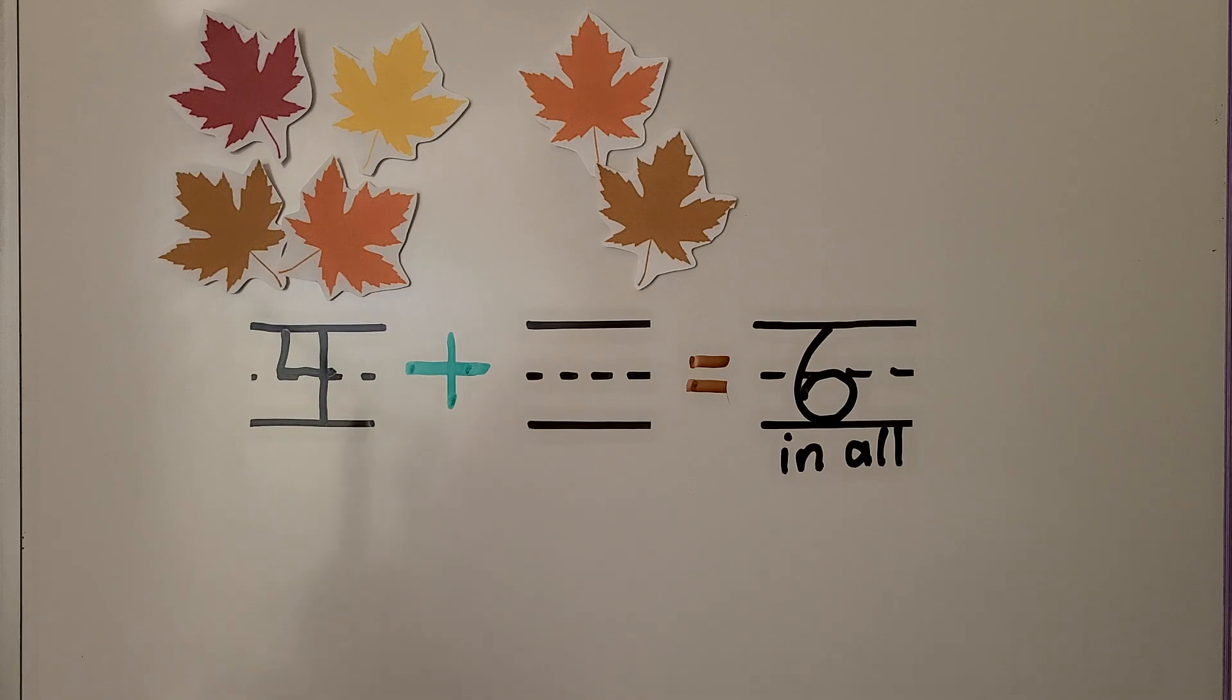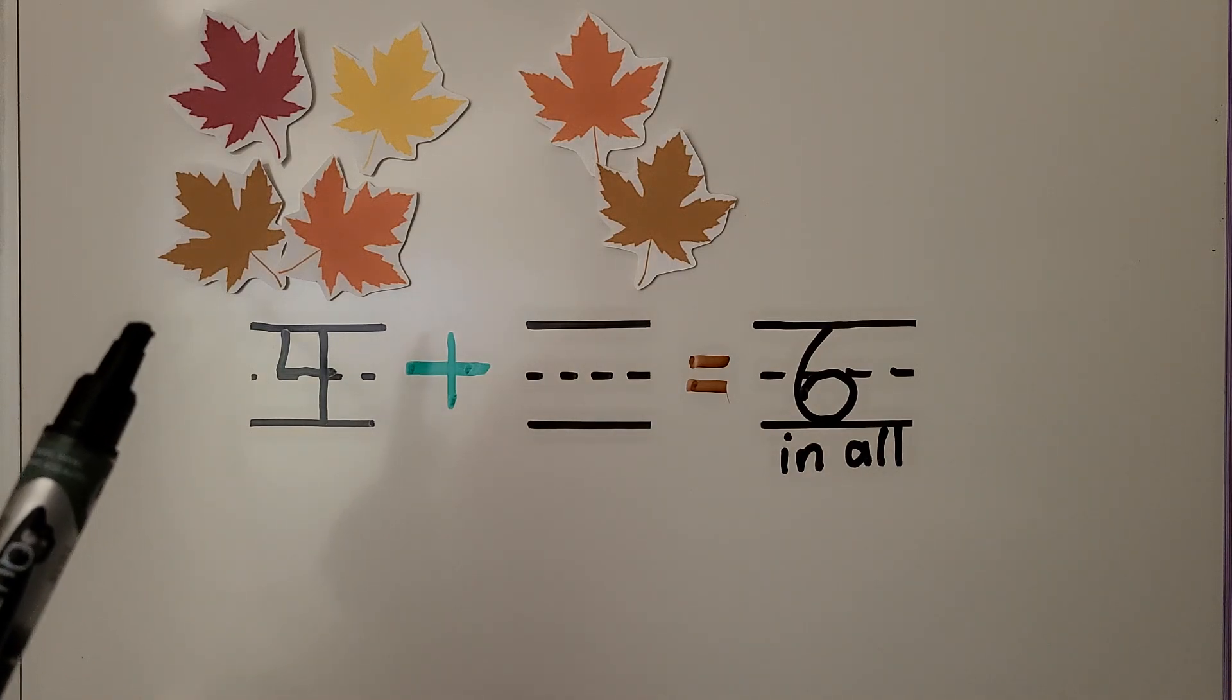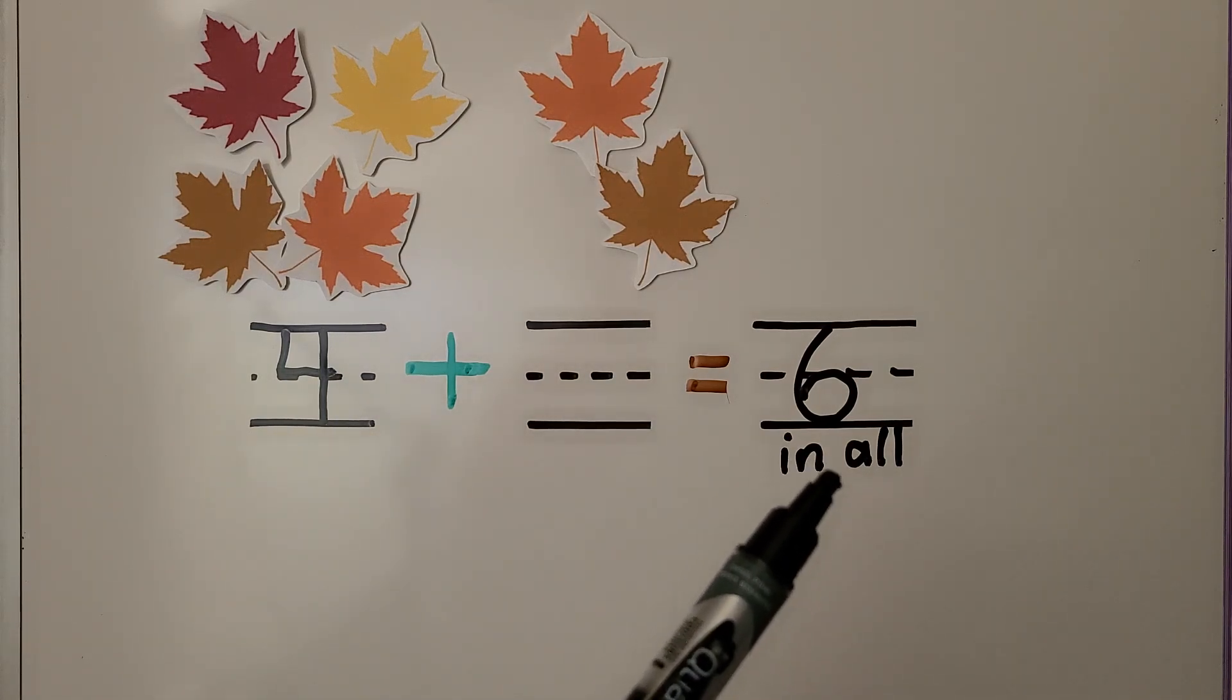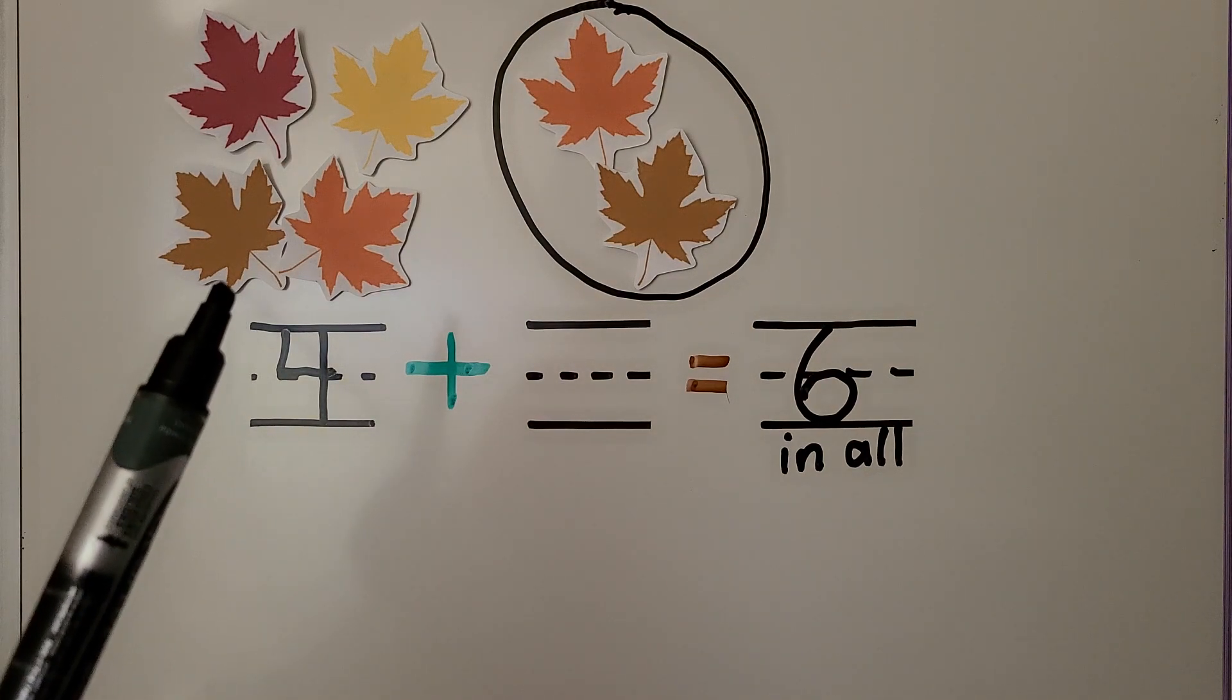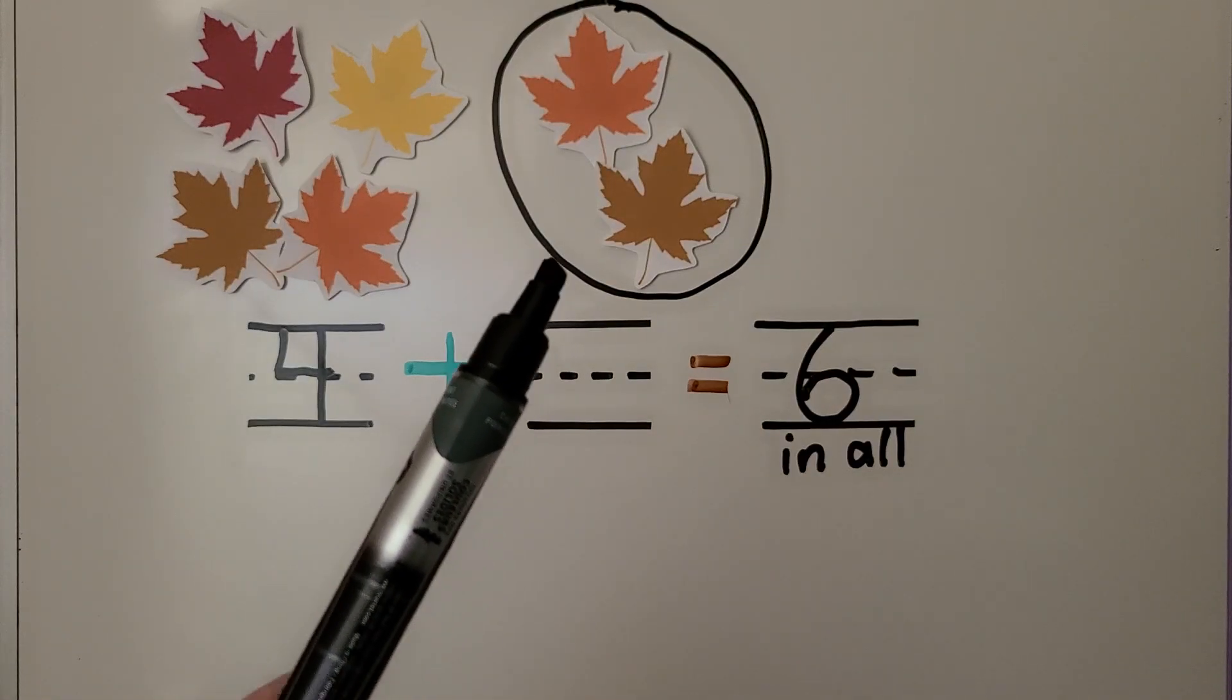We know that there were four at first and we know there are six now. We can circle the leaves that are being added. Here are the four leaves that were on the ground. These are the leaves that are being added.